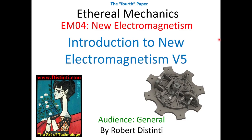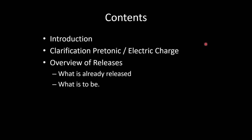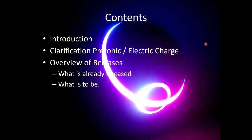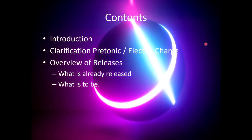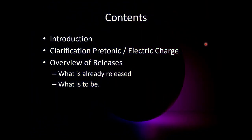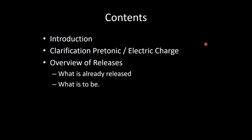Hi folks, welcome to the introduction to New Electromagnetism version 5. New Electromagnetism is the fourth paper in the Ethereal Mechanics series. In this video, we're going to introduce New Electromagnetism version 5, make a clarification from the Electrogravity paper regarding the difference between pre-tonic and electric charge, and then overview the upcoming releases in the New Electromagnetism V5 series — what's already released and what is to be released.